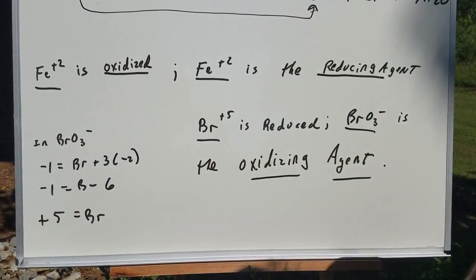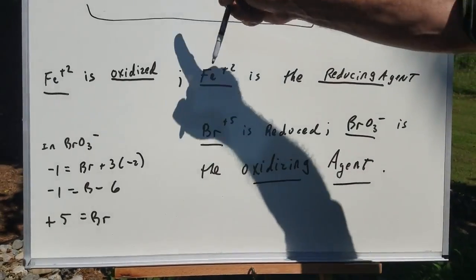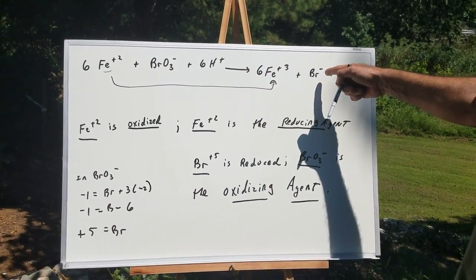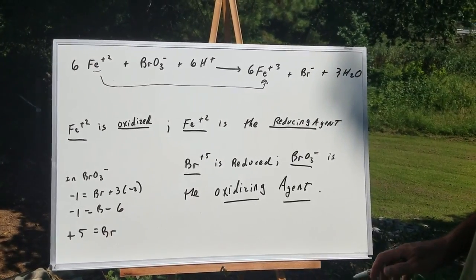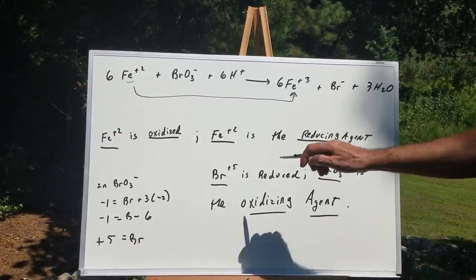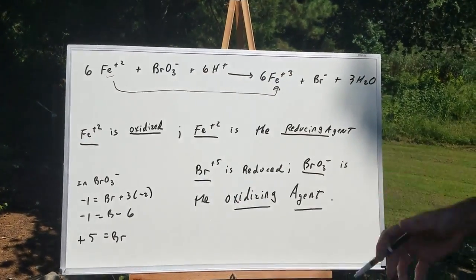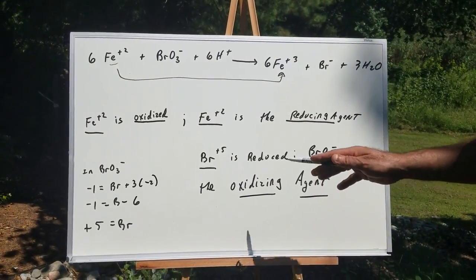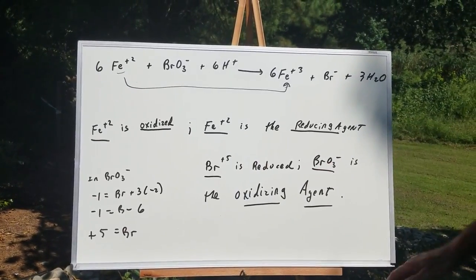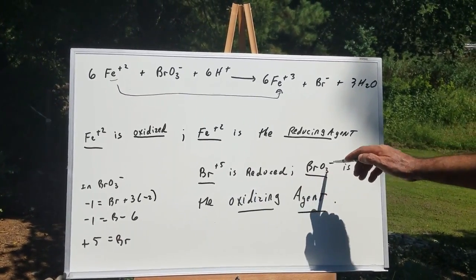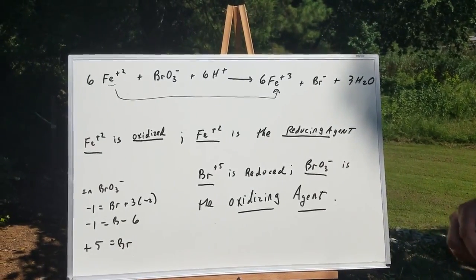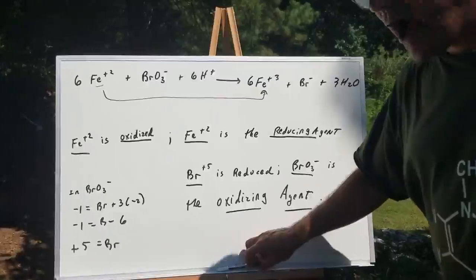So bromine plus five is going down. Since the oxidation number goes down, the Br+5 is reduced. And the entire species that contained that atom being reduced is the oxidizing agent. So Br+5 is being reduced, and BrO3- is the oxidizing agent or the oxidant. I hope that helps.